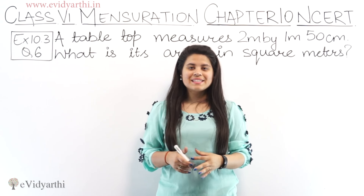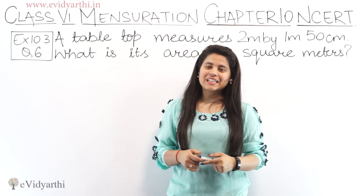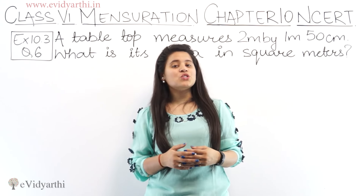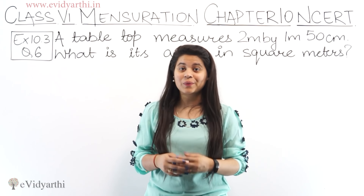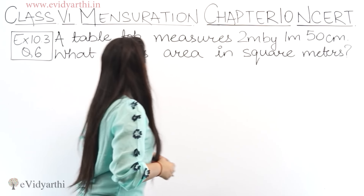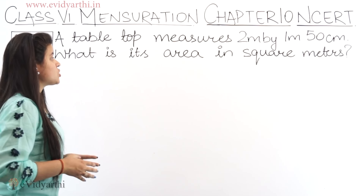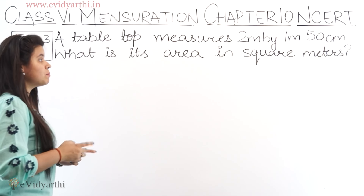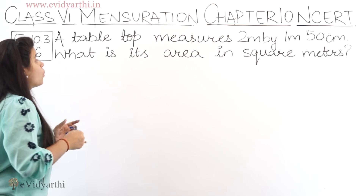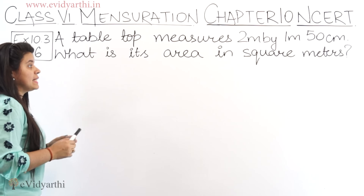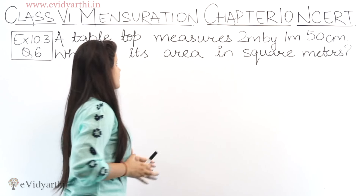Hello everyone, this is Mansi from Evitaati George. Now we are starting with question number 6, exercise 10.3. In this question, we have a table top that measures 2 meters by 1 meter 50 centimeters. What is its area in square meters?